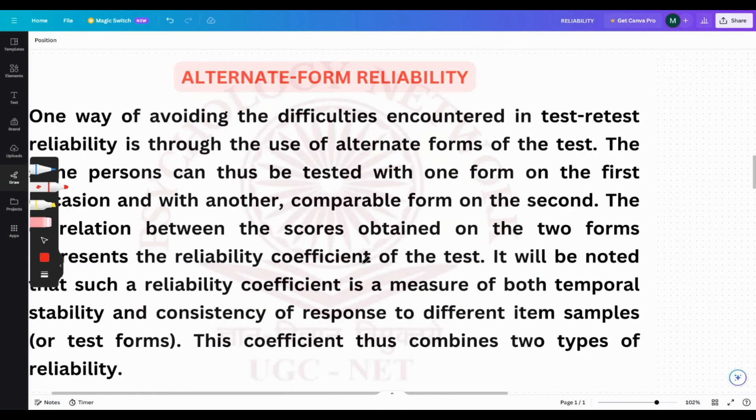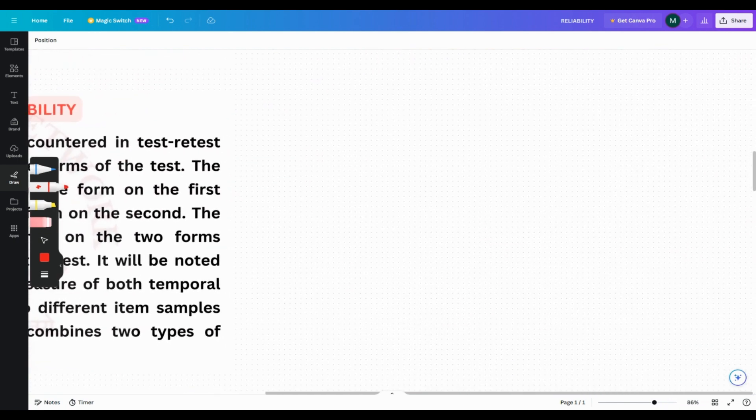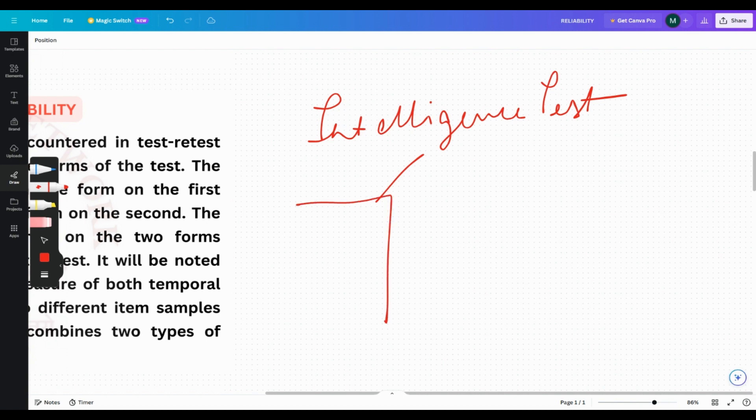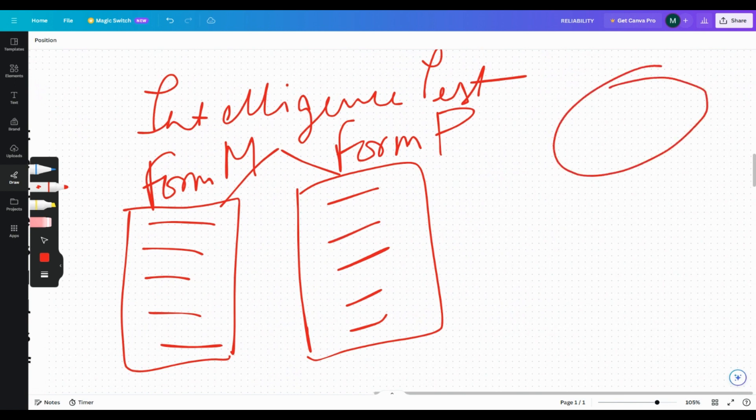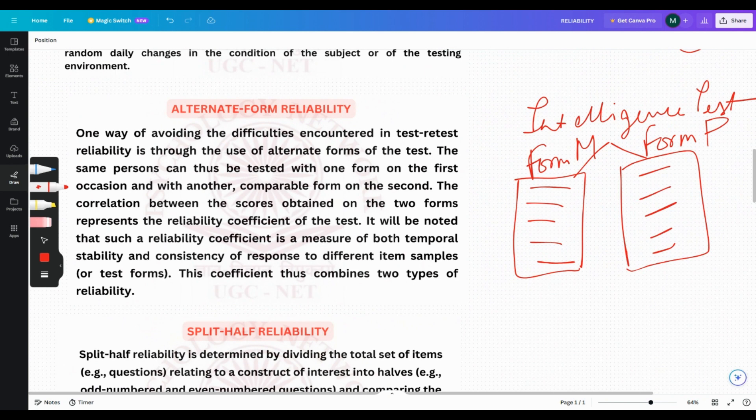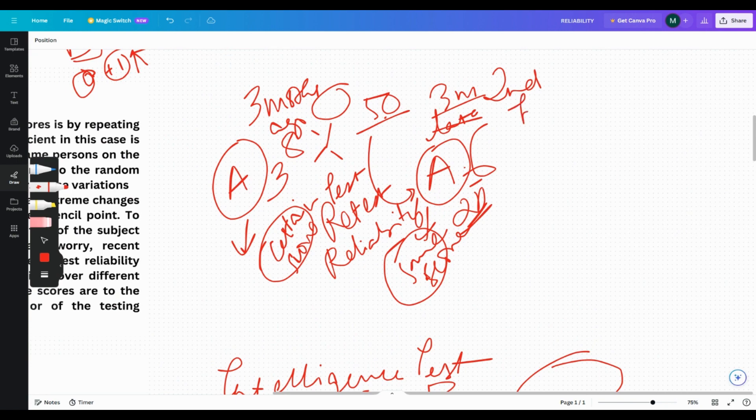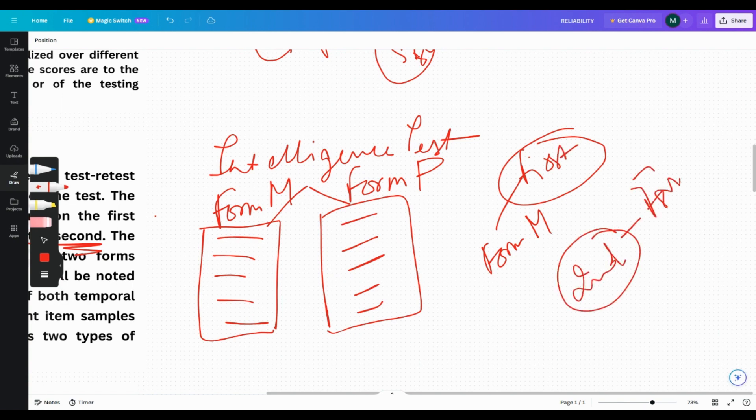Moving to the second one is alternate form reliability. Again, when I complete my explanation, pause the video and read what is written. I'll explain here what it means. For suppose intelligence test, there are two identical forms: Form M and Form P. Suppose a group of people are given Form M. The same person can be tested with one form on the first occasion and with another comparable form on the second. Here in the first trial they were given Form M, and in the second trial they were given Form P.